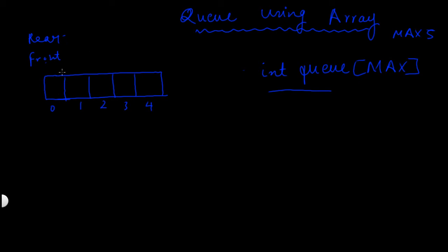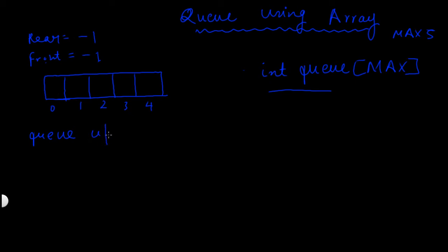Initially, when the queue is empty — as you can see, the queue contains no elements — the value of rear is equal to minus 1 and the value of front is also equal to minus 1. When the queue is empty it is also known as queue underflow condition. When the value of front is equal to minus 1, it means the queue is empty.